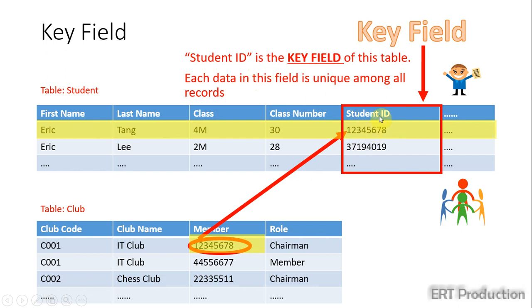Therefore, it's important that each table should have a field by which we can uniquely identify a record without any ambiguity. We call this field a key field of a table.